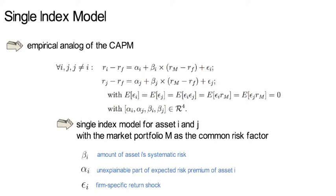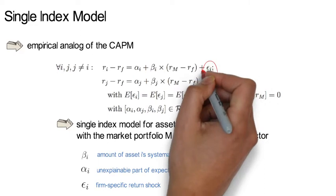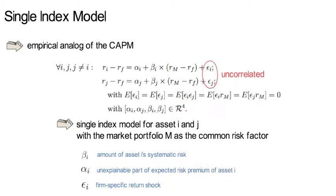The single index model assumes that different firm specific return innovations, epsilon i and epsilon j, are uncorrelated with each other and with the single index. In addition, these disturbances are zero on average.